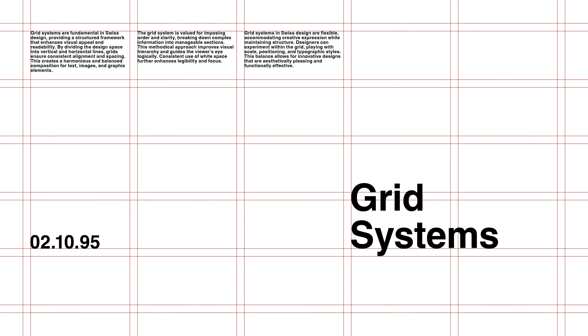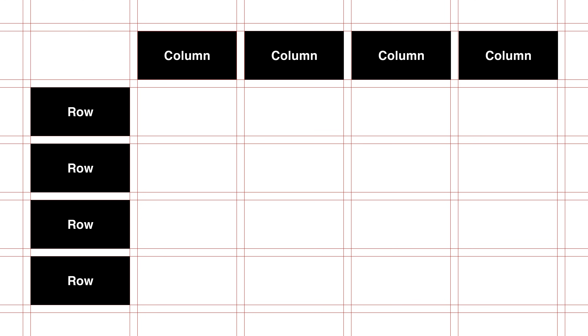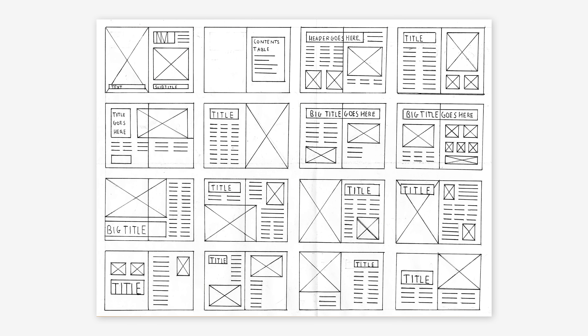Grids are essentially invisible guides that designers use to position text, images, and other elements on a page. By dividing the space into a series of columns and rows, grids help to maintain order and coherence, making the design easy to navigate.